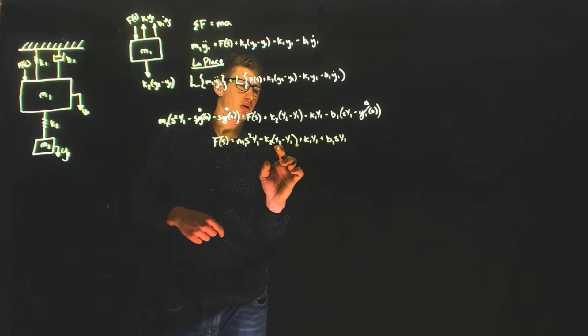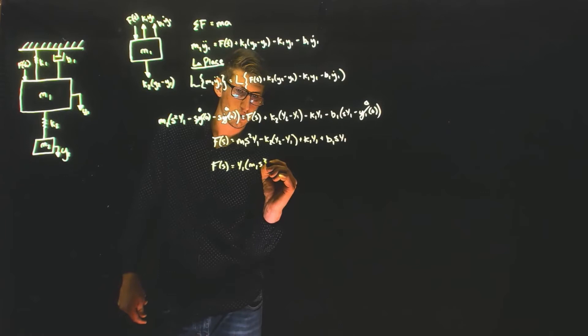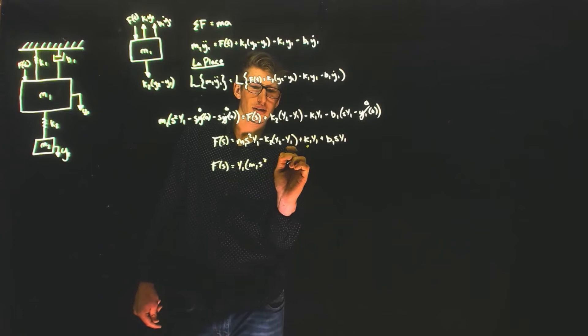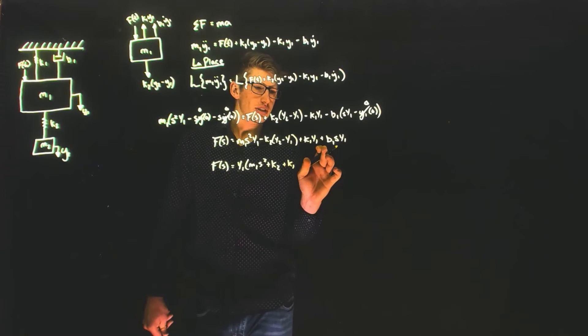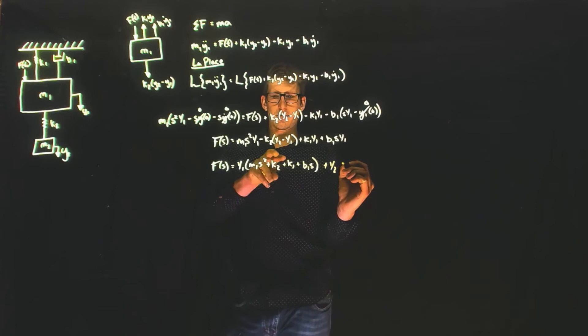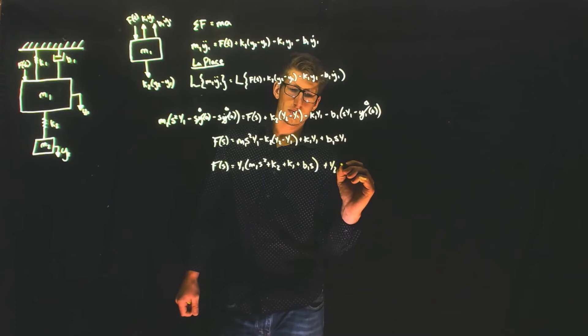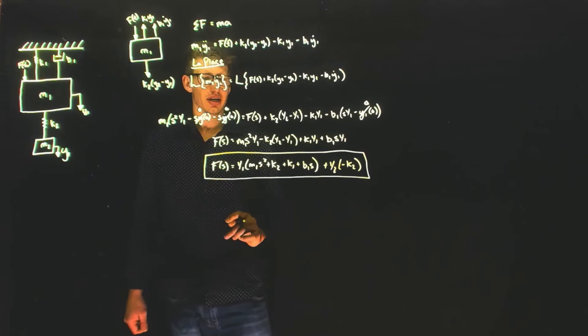So F(S) equals Y1 times (M1·S² plus K2 plus K1 plus B1·S) minus Y2·K2. This is the final Laplace domain equation for mass number one.